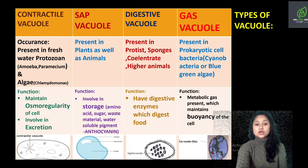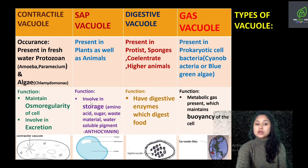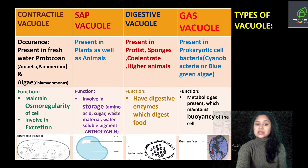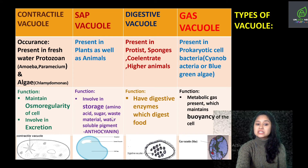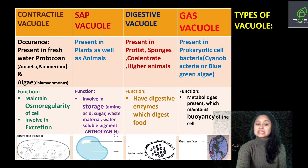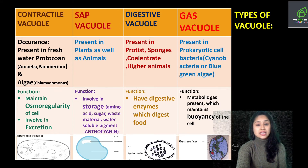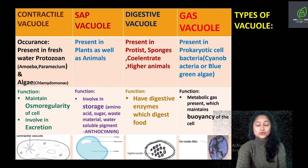Talking about the functions of sap vacuoles, they are involved in storage of amino acids, sugars, waste material, and water-soluble pigment that is anthocyanin. And this anthocyanin imparts color to fruits and flowers.